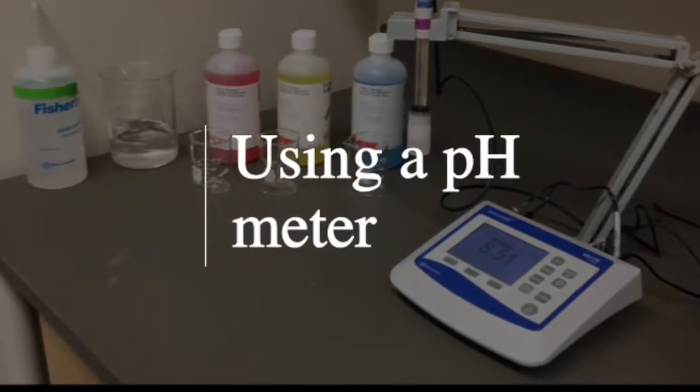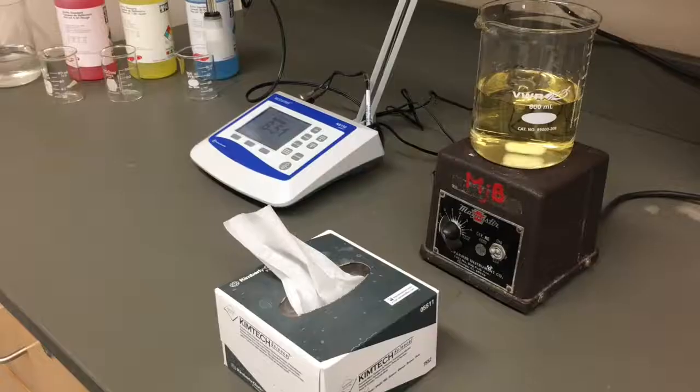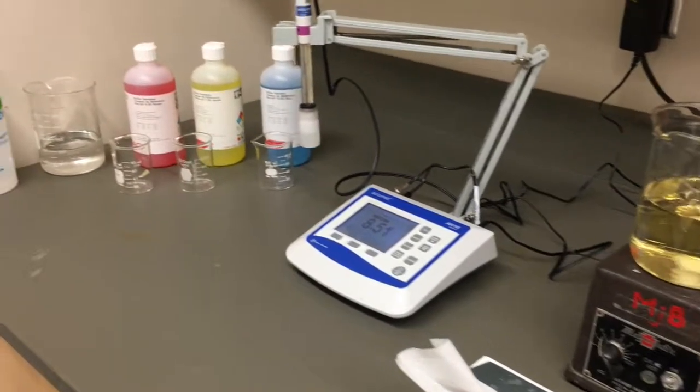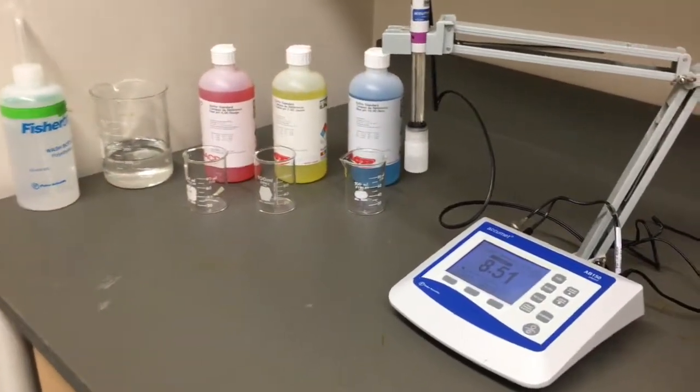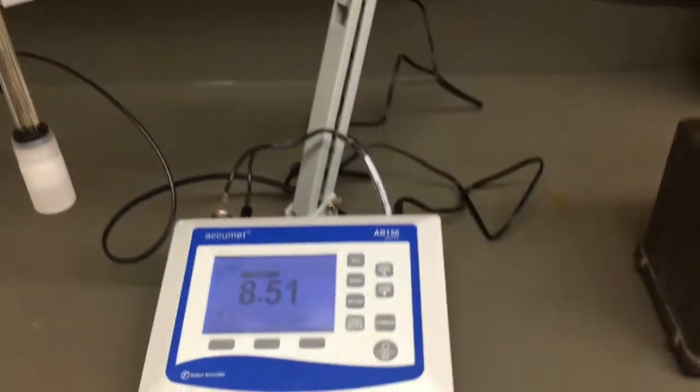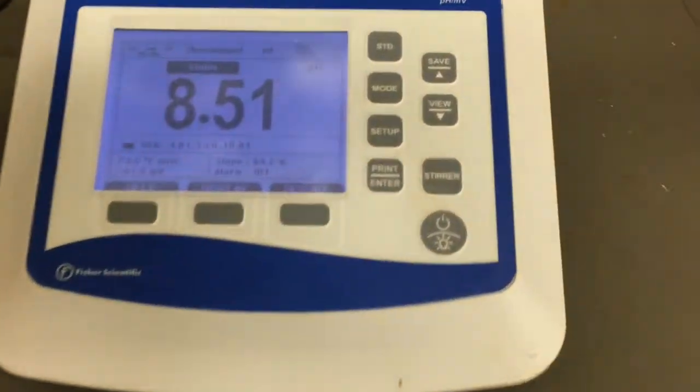This video is the general process for using a pH meter. Each pH meter will be slightly different, so consult your manual for specific instructions. We will demonstrate the general process using the Fisher Acumet model AB150.